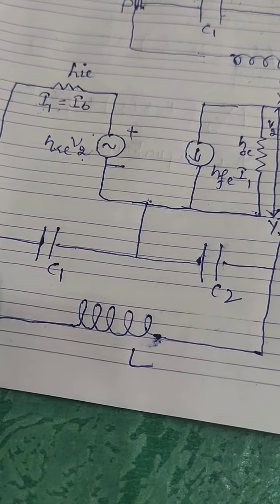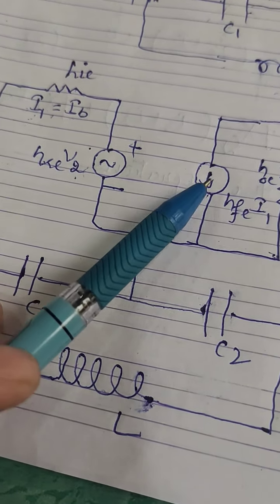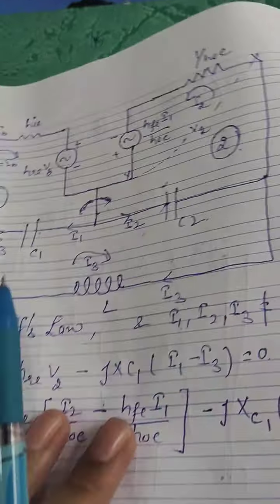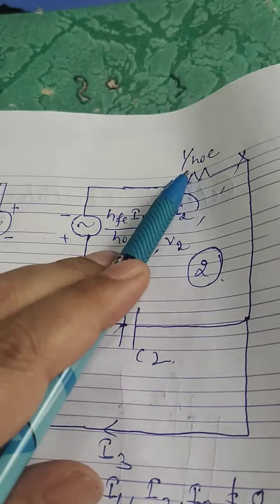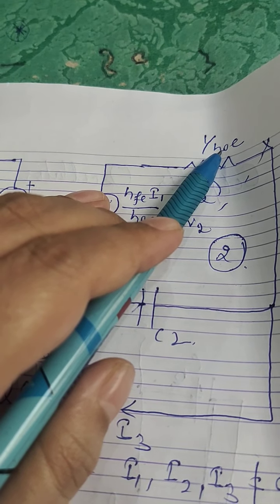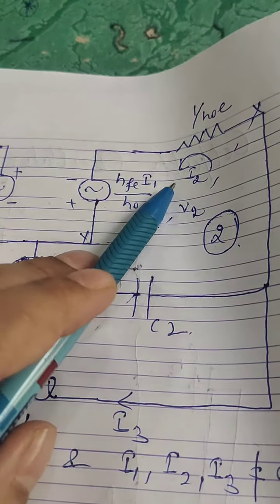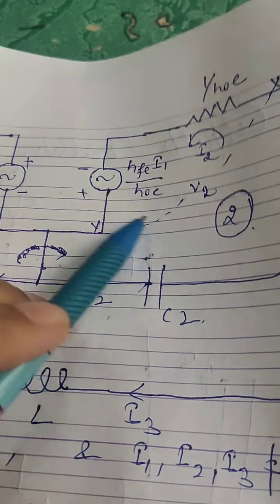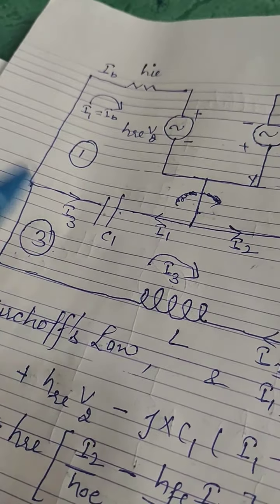The two capacitors are connected in series and L is the inductor part. Using Thevenin's theorem, we convert the current source into a voltage source. When converting, the resistance connected in parallel is now connected in series. Since hoe is our conductance, 1/hoe is our resistance. The voltage hfe·i1 divided by hoe appears as voltage v2 across this part. We divide the circuit into three parts — part one, part two, and part three — with three loop currents i1, i2, and i3.